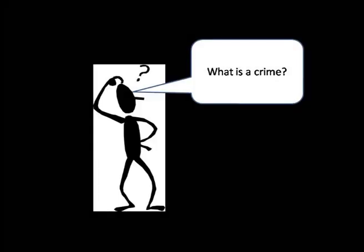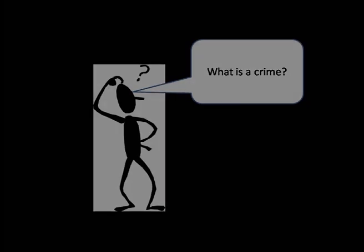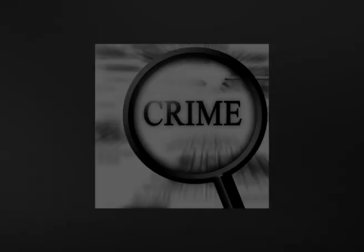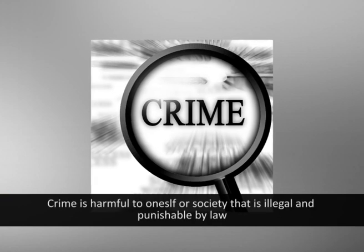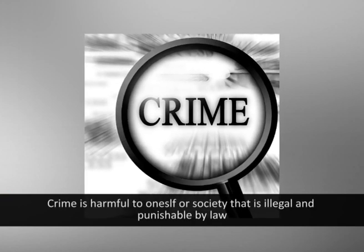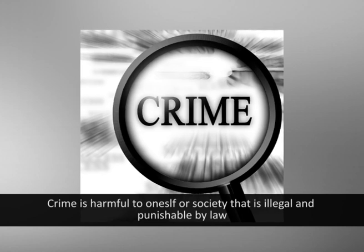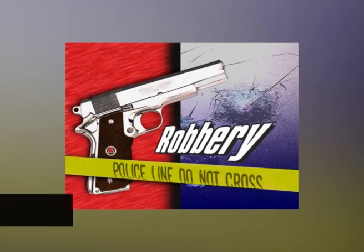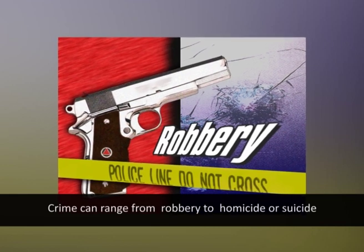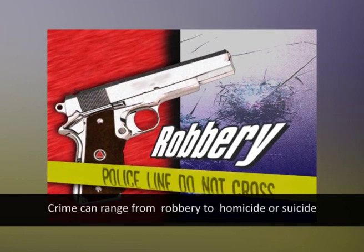Now let us discuss what crime is and its types. Crime is any action that violates the law of a country or rules of the state. It is that action which is harmful to oneself or the society, that is illegal and punishable by law. A crime can range from a minor level of robbery to the extent of homicide or suicide.